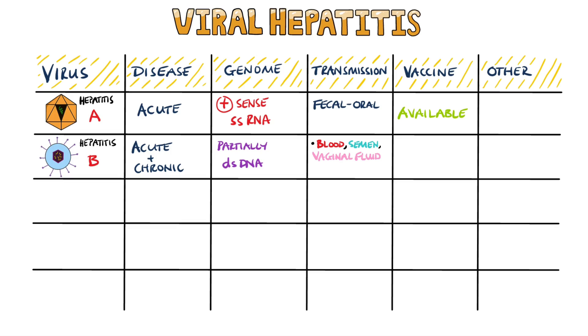Hepatitis B can be transmitted from mother to fetus and is most often transmitted through intravenous drug use or sexual contact. There is a vaccine available for hepatitis B.